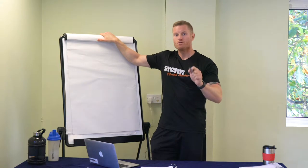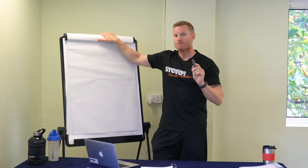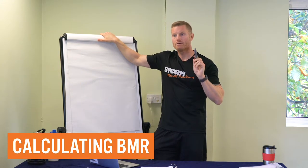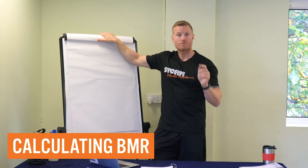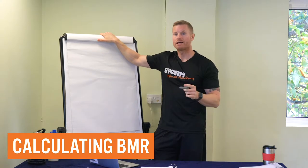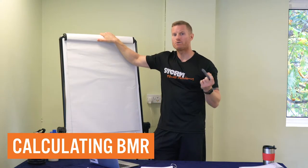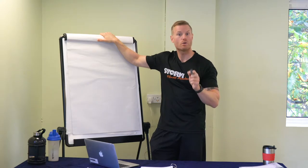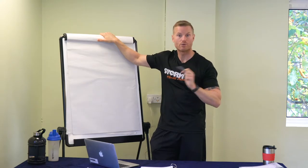I've mentioned basal metabolic rate before, and I've said previously that mine's around 1800 calories. How do I know that? I know that because I've done an equation that calculates my basal metabolic rate.